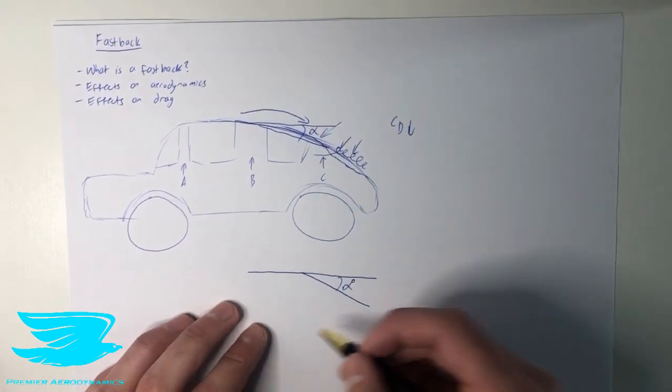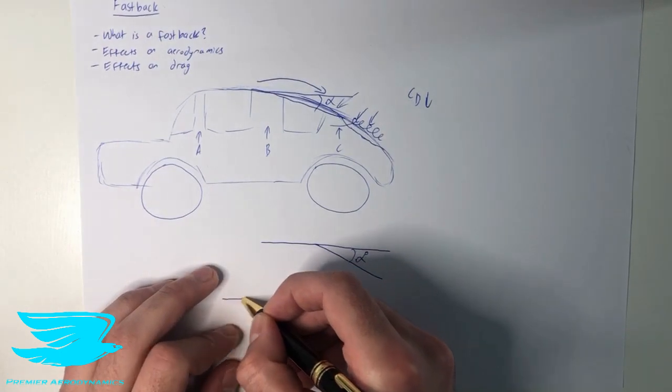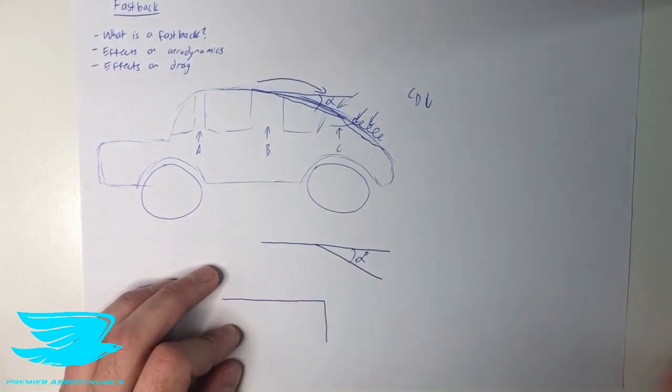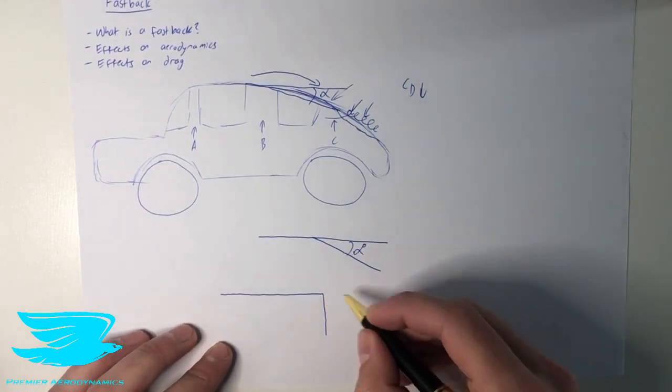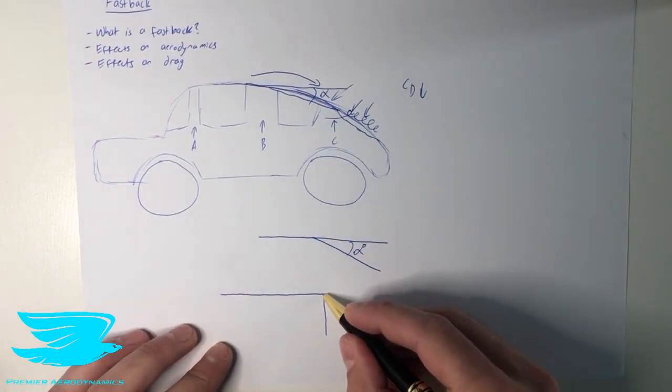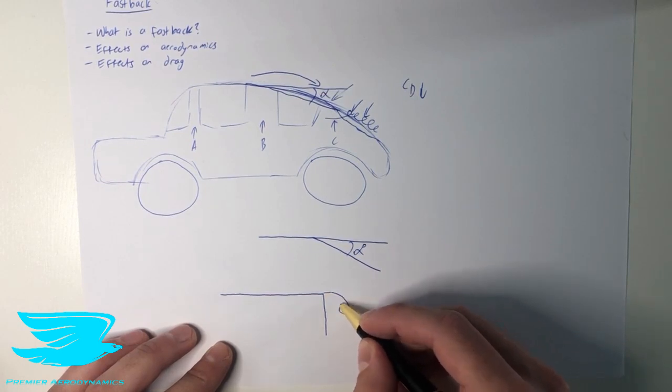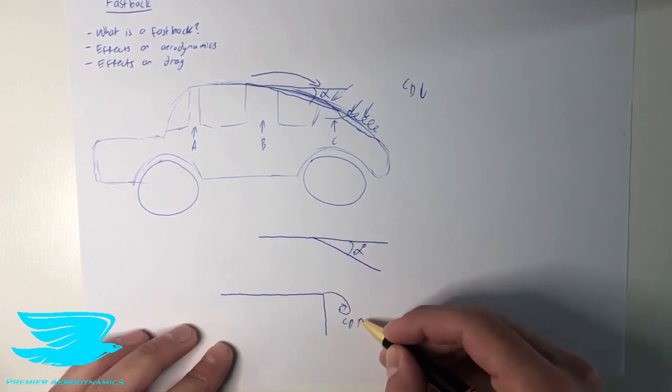So let's say we have, first up, just a regular flat roof, and then it goes into like a square back. So most cars are not like this, but let's say this is the extreme version. So in this particular case, there is a huge separation zone around here. And this creates a lot of drag. So drag is very high.